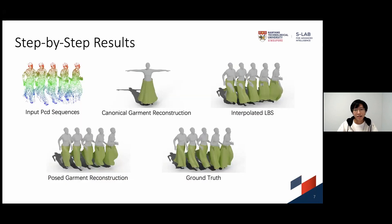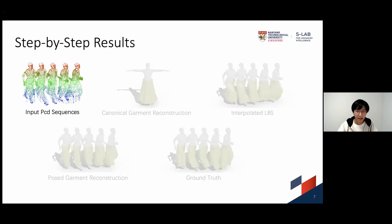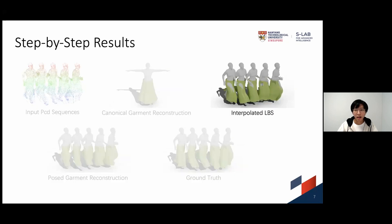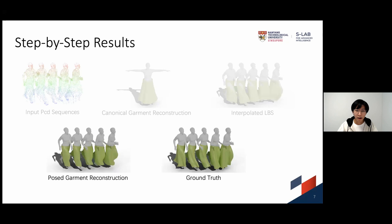To better understand the whole reconstruction process, we provide a step-by-step visualization. Canonical garment is first estimated from the input point cloud sequences. Then, interpolated LBS is performed to generate posed garment candidates. These candidates can be very different from the ground truth and may interpenetrate with the human body. Finally, candidate garments are refined by iterative displacement prediction, which can effectively capture garment dynamics and body-garment interaction.